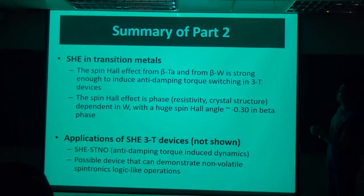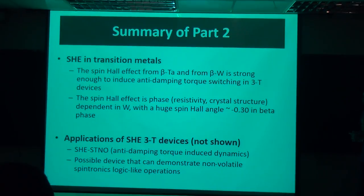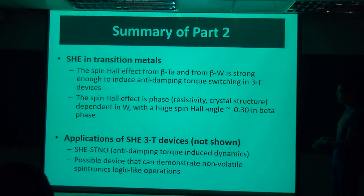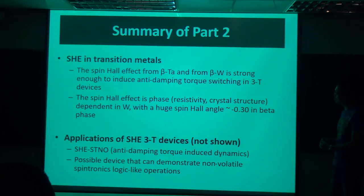The spin-Hall effect in transition metals is pretty large, especially in tungsten — it's minus 3%. And for the implantation, not shown here, we can do spin-torque nano-oscillators and possible devices that can demonstrate logic-like operations.